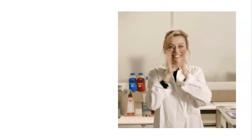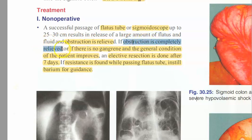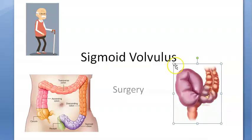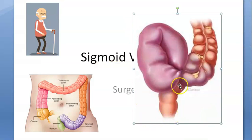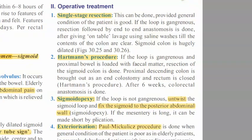For treatment: you put a flatus tube inside using a sigmoidoscope, push it up 25 to 30 centimeters, and a large amount of flatus will come out, relieving the obstruction. If the obstruction is completely relieved, the patient passes flatus with ease and without resistance, and if there is no gangrene and the general condition improves, you can do elective resection after seven days. If there is still resistance, instill barium for guidance.